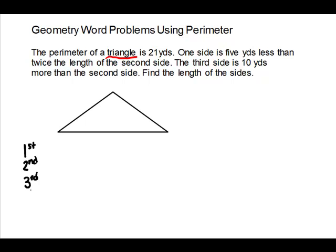Going back to the problem: one side is 5 yards less than twice the length of the second side, and the third side is 10 yards more than the second side. The one they tell us nothing about is the second side, so we define that as our variable x. For the first side: less than means subtract and goes backwards, so 5 yards less than twice the second side is 2x minus 5.